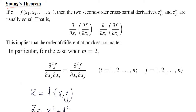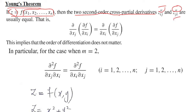We assume that we have a function where z is a function of n variables, starting from x1 to xn. Two second-order cross partial derivatives can be calculated: the derivative of z with respect to i and then with respect to j — we have two bars here — and again two bars where it is differentiated with respect to j and then i.